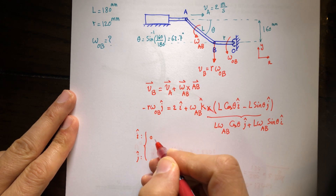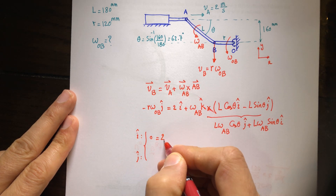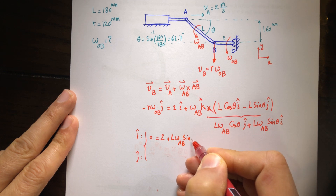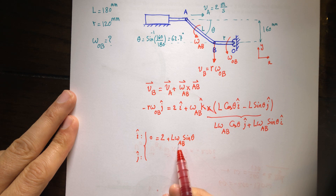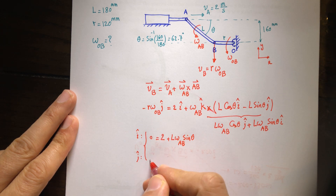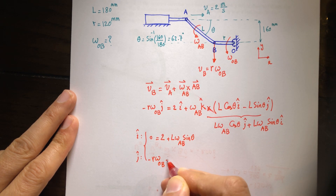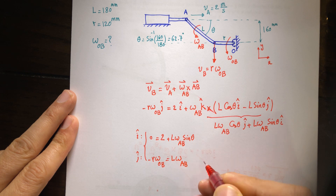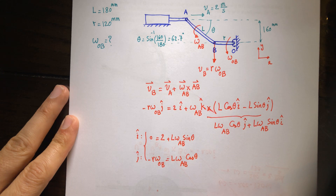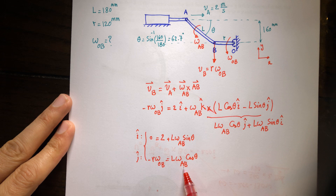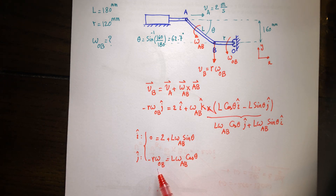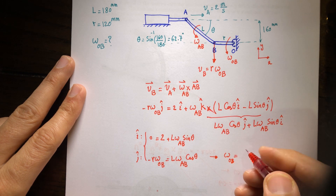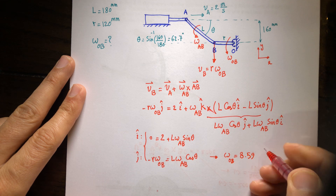For the I component: 0 equals L times omega AB times sine of theta. From this equation I can find omega AB. For the J component: negative R omega OB equals L times omega AB times cosine of theta. We have two equations and two unknowns. From the first equation I can find omega AB, and plugging it into the second equation I can find omega OB. If you do it correctly, omega OB is equal to 8.59 radians per second.